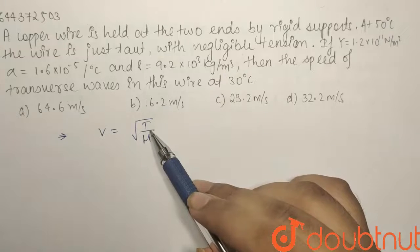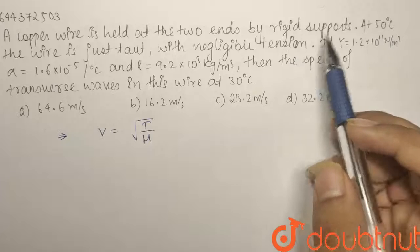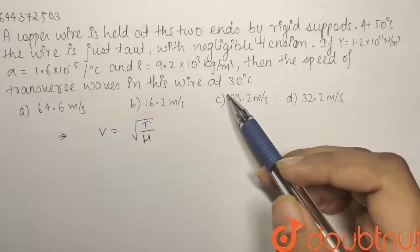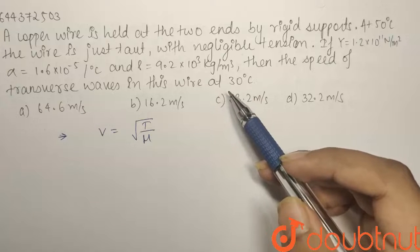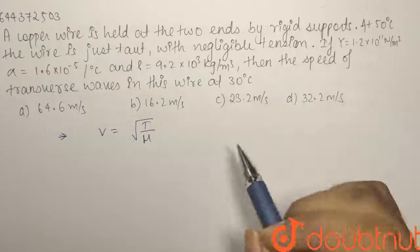Now, in this case why will the tension be produced? It will be produced because initially the tension was zero, but after some time the temperature of the wire has been decreased. Due to this there will be a stress in it and due to this stress a force will be produced.